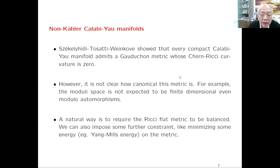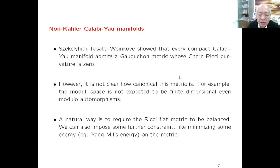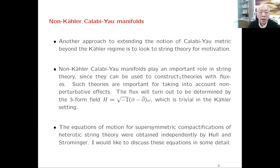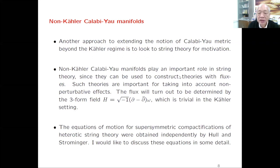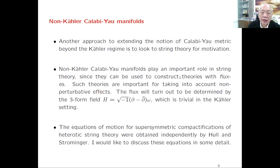Even requiring the metric to be balanced may not give a canonical situation. We may need to impose further constraints, for example minimizing some energy like the Yang-Mills energy on the metric. Then looking at string theory for motivation—physics always gives rise to something more interesting and canonical. Non-Kähler Calabi-Yau manifolds do play a role in string theory, which we will now discuss.